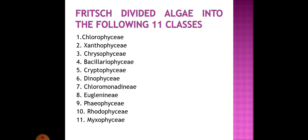The 11 classes are: Chlorophyceae, Xanthophyceae, Chrysophyceae, Bacillariophyceae, Cryptophyceae, Dinophyceae, Chloromonadaceae, Eugleninae, Phaeophyceae, Rhodophyceae, and Myxophyceae.